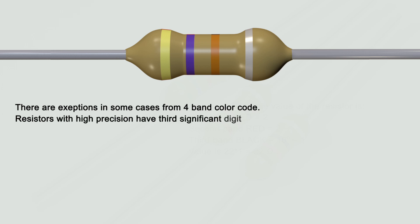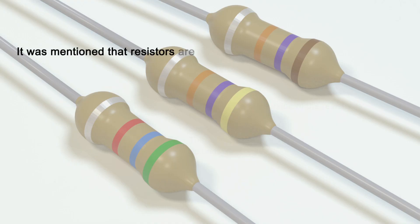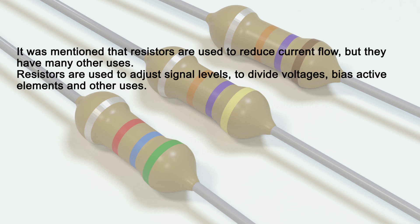There are exceptions to the 4-band color code. Resistors with high precision have a 3rd significant digit — they use a 5-band color code. There are also 6-band color code resistors with an extra band for the temperature coefficient. It was mentioned that resistors are used to reduce current flow, but they have many other uses: resistors are used to adjust signal levels, to divide voltages, to bias active elements, and other applications.